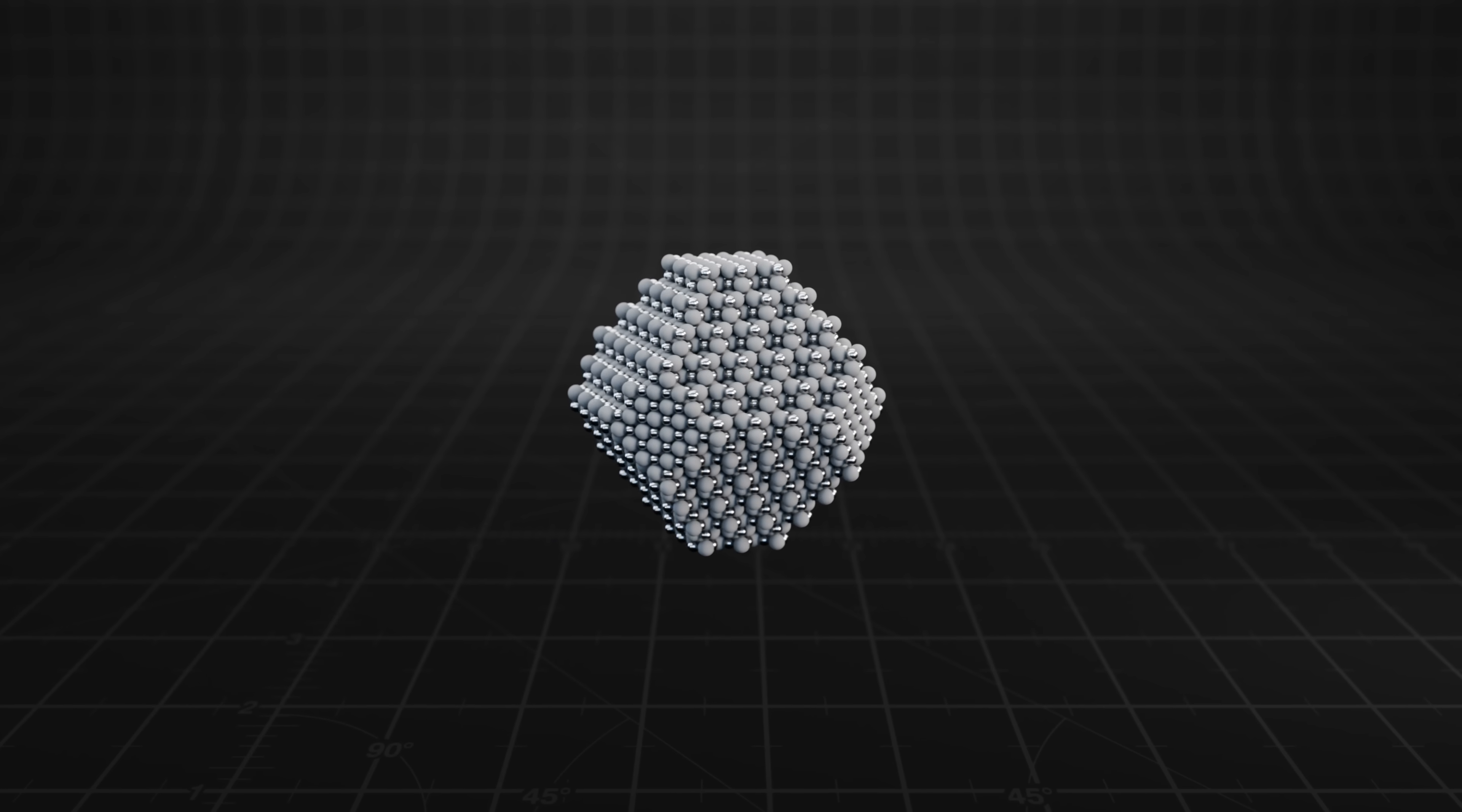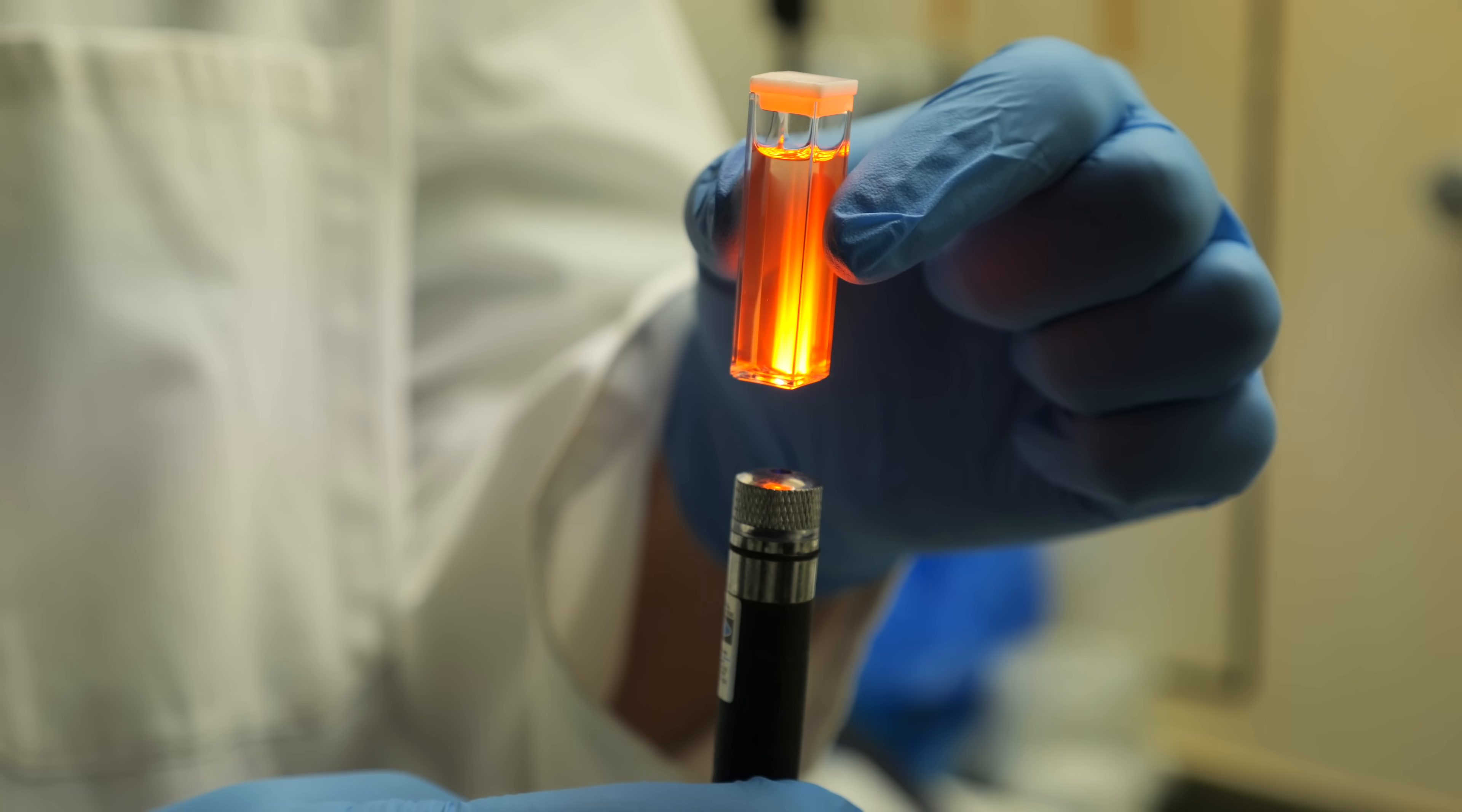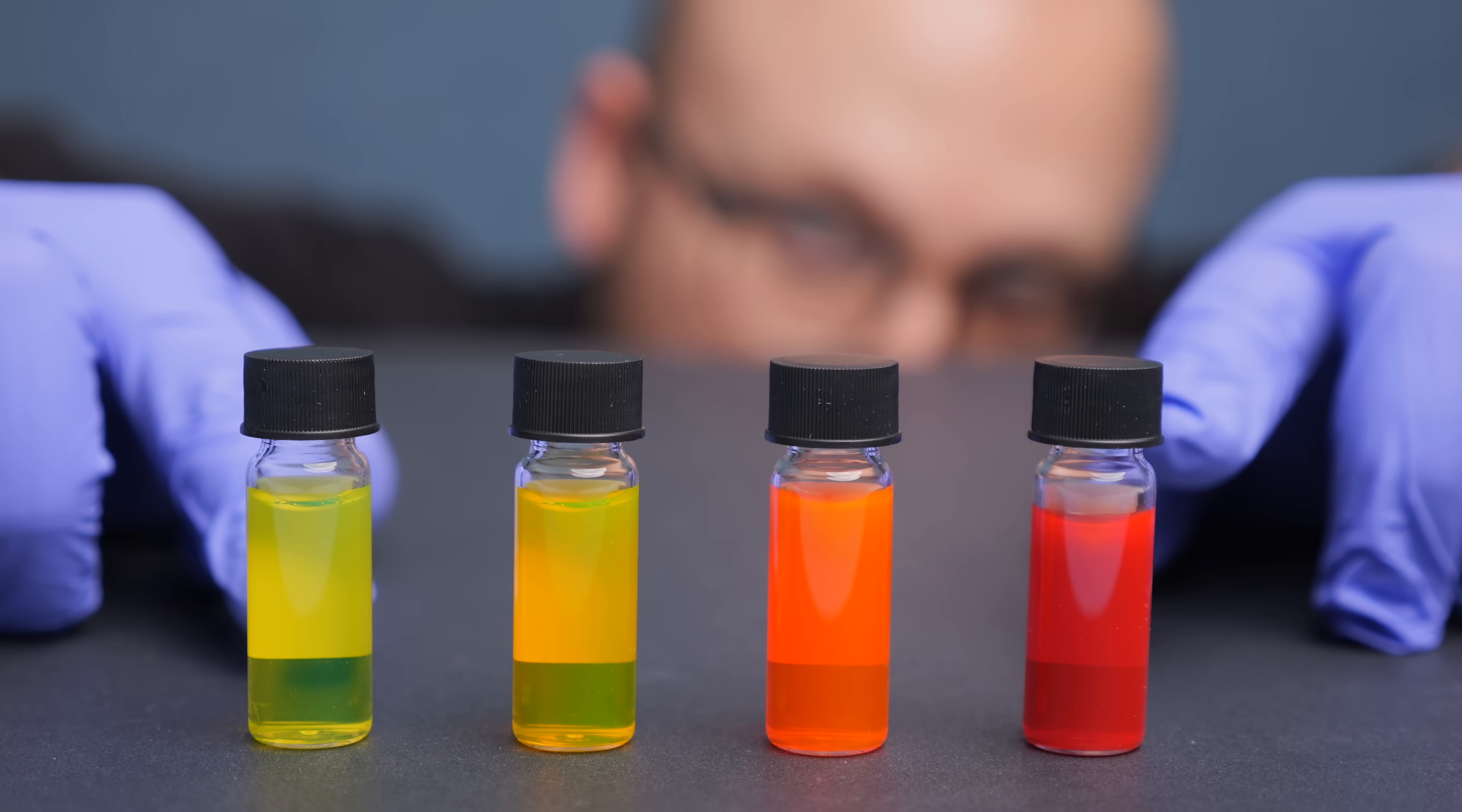Quantum dots are tiny nanocrystals only a few dozens of atoms wide, and not only are they some of our earliest proof that quantum physics is real, but they're also already used to create the brilliant colors of many high-end displays, including in the TVs of Samsung and Sony, and one day they're even expected to revolutionize everything from solar panels to camera sensors and more.